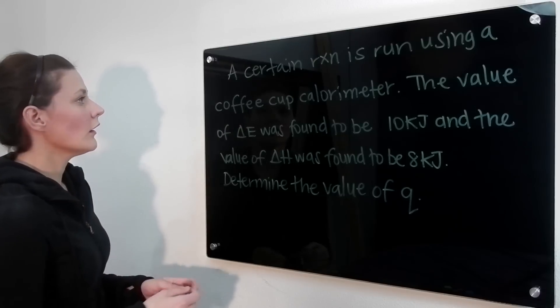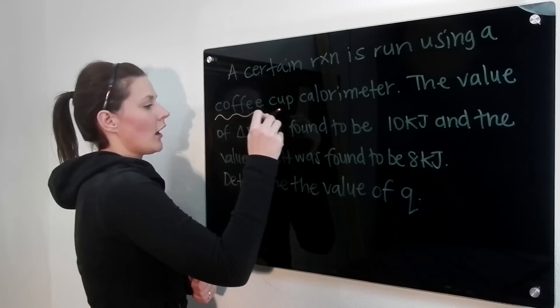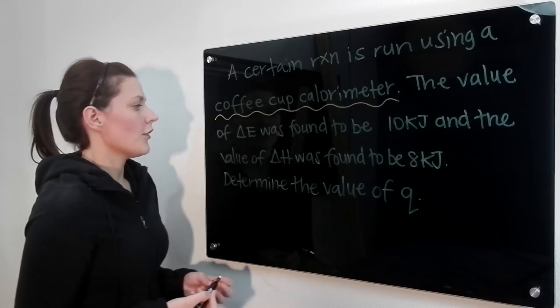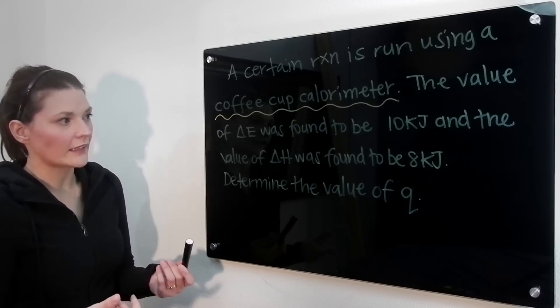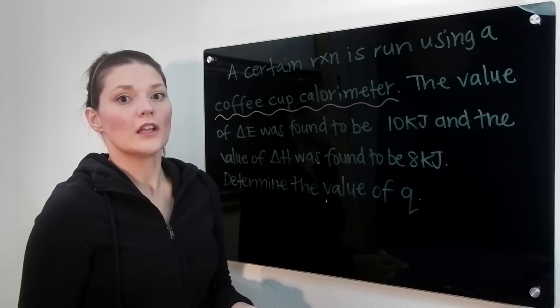So pretty much the same question. A certain reaction is run using a coffee cup calorimeter. The value of delta E was found to be 10 kilojoules, and the value of delta H was found to be 8 kilojoules. Determine Q.